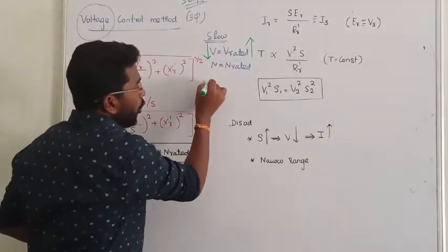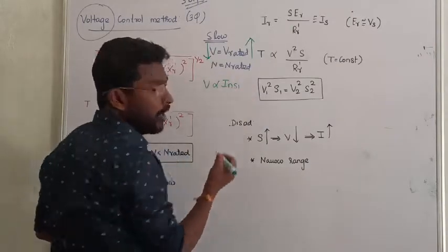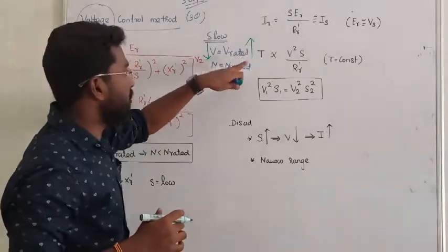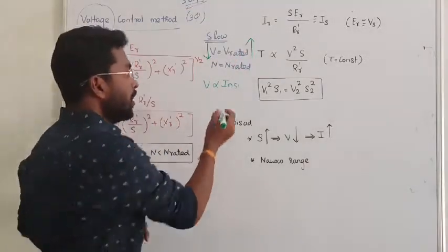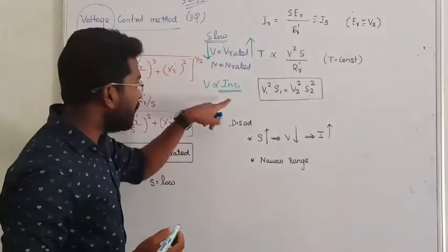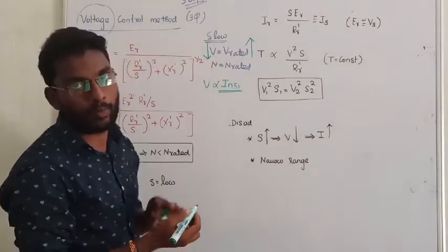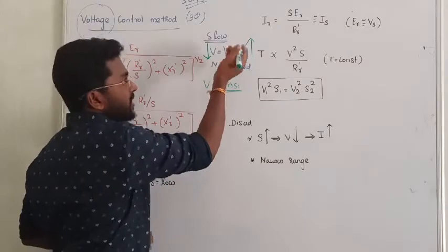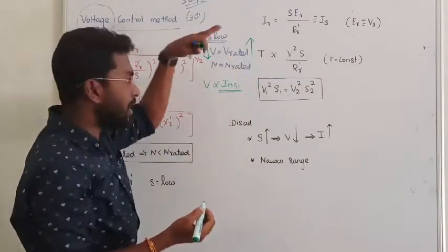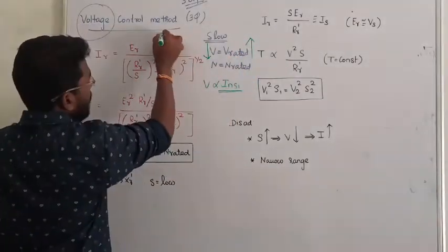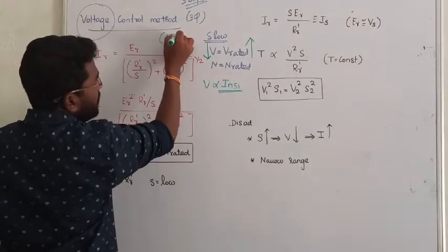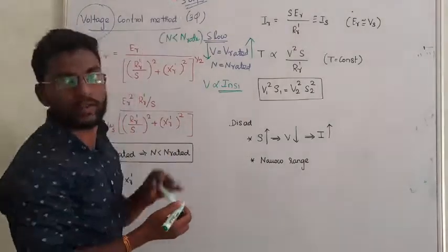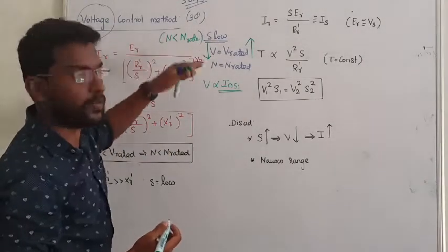We know that voltage is directly proportional to insulation stress on the winding. If you apply above the rated voltage, the insulation may get damaged. So you can only control the voltage below the rated voltage, and the speed will then be below rated speed. You cannot increase the speed of the induction motor above rated speed — that is the first conclusion.